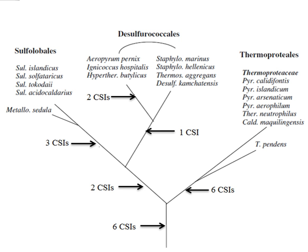The exact phylogenetic relationship between plants, animals and fungi is not well understood. A small CSI-based study was conducted to elucidate this relationship. Four CSIs were used to place animals and fungi together as a monophyletic group and exclude plants. These CSIs were found in two essential cellular proteins, elongation factor L and enolase. However, traditionally this specific relationship between fungi and animals has not been supported.